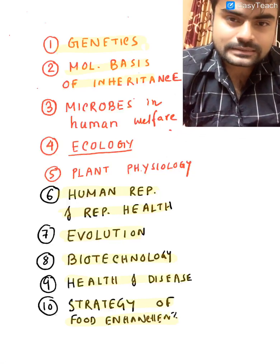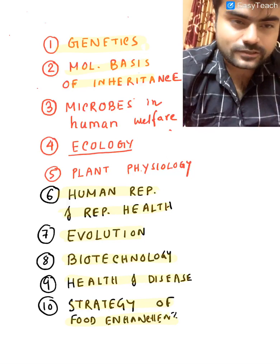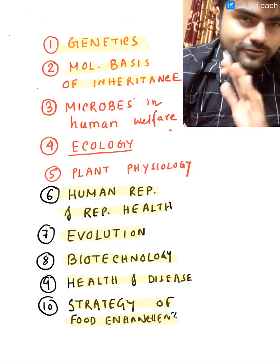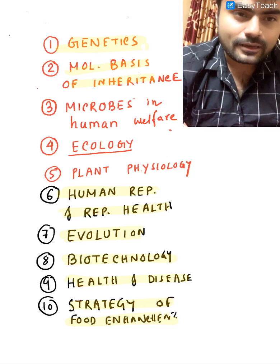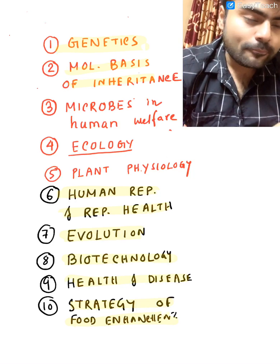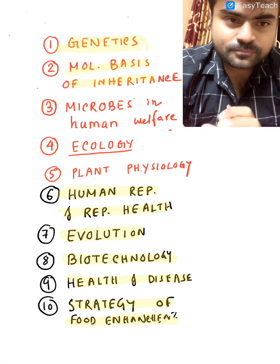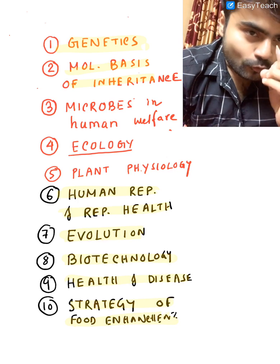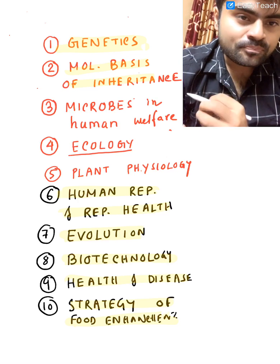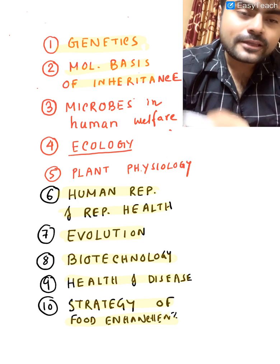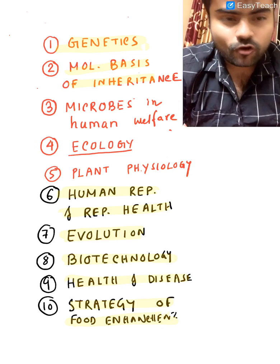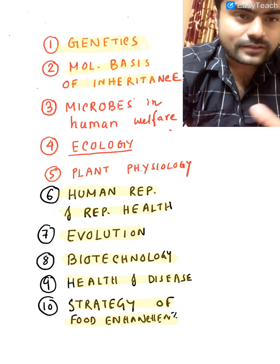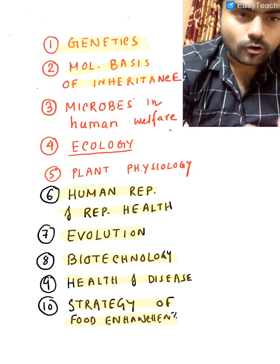The first topic is genetics. You have to know everything about genetics — every line, every diagram, every flowchart, every table. Mainly you have to know about linkage, Down syndrome, Turner syndrome and Klinefelter syndrome. You have to know about sickle cell anemia, hemophilia, colorblindness, and obviously Mendel's experiment. In genetics overall, every line is important.